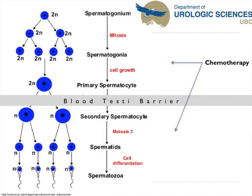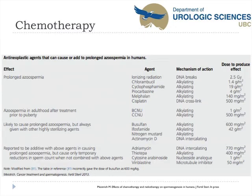Looking briefly at chemotherapy: cells outside the blood-testes barrier are at direct risk for gonadotoxins and apoptosis induction, while cells inside are at risk for lack of differentiation and oxidative stress. Alkylating agents are the worst for creating azoospermia, directly attacking dividing cells. Other agents such as adriamycin and vinblastine produce transient azoospermia but patients often recover. Cisplatin and cyclophosphamide can produce prolonged azoospermia.